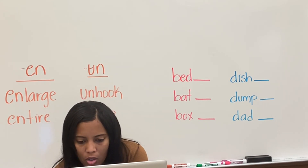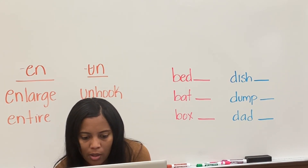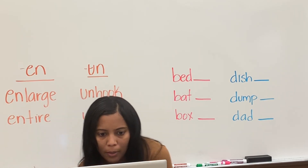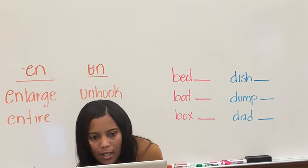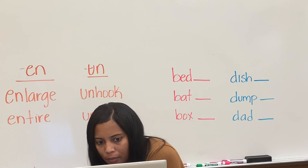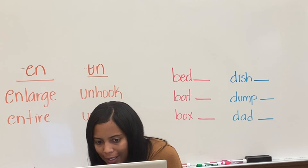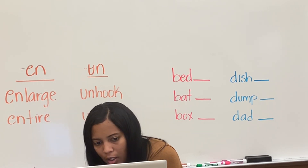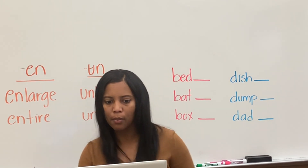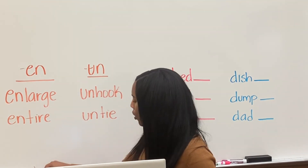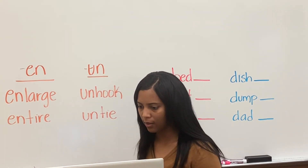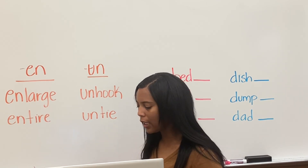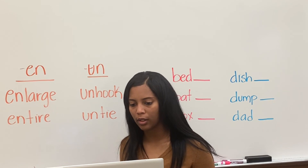So today we're going to learn the next two prefixes on chart 12. I'm going to show you the chart so we can be reminded of it. Okay, so we have E-N that says 'in,' like in 'enjoy,' and U-N that says 'un,' like in 'unbutton.' So E-N: in. U-N: un. Let's look at the board here. Whenever we are marking a prefix and a root word, what do we do to the prefix? Circle it.